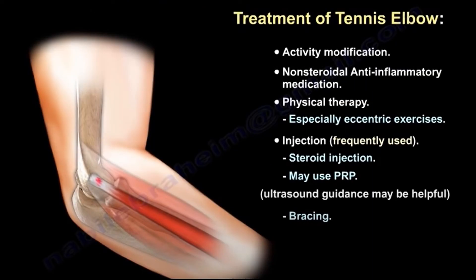Treatment of tennis elbow usually starts with conservative treatment in the form of activity modification, non-steroidal anti-inflammatory medication, bracing and straps for the elbow, physiotherapy — especially eccentric exercises — acupuncture, shockwave therapy, iontophoresis, and injection, which is frequently used.